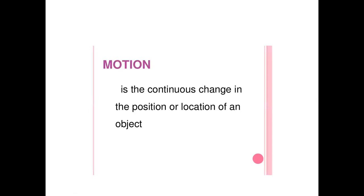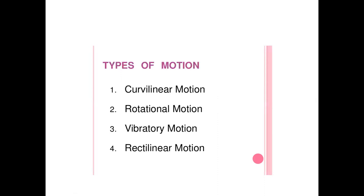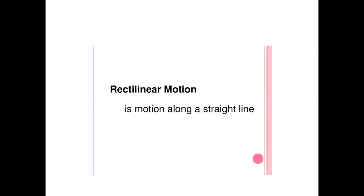Motion is a continuous change in position or location of an object. As mentioned previously, many types of motions exist: curvilinear, rotational, vibratory, and rectilinear. But we are going to concentrate on only two of these — curvilinear and rectilinear. Precisely in this video, we are going to learn about rectilinear motion.